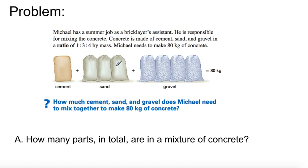So what's in the bag essentially? How much cement, sand, and gravel does Michael need to mix together to make 80 kilograms of concrete? Alright, so question number one.